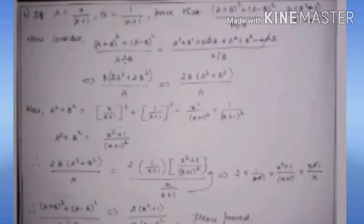Now we move to the 6th sum. A = X/(X + 1) and B = 1/(X + 1). This is similar to the previous sum. Here we have the expression [A + B)² + (A − B)²] divided by (A/B), and the expression divided by (A/B) again. We have to prove this equals 2(X² + 1) / [X(X + 1)²]. We will consider the LHS.